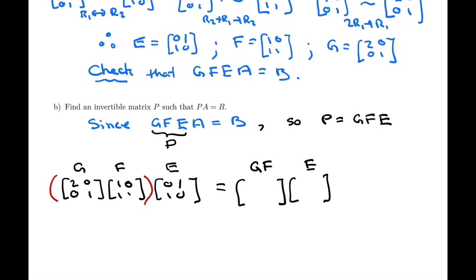So GF, first row times first column, 2 times 1, 0 times 1 is 2, and 0. Second row, first column, 1, and second row, second column, also 1. And E is still 0, 1, 1, 0. And then we can carry out that multiplication, and that will give us GFE.